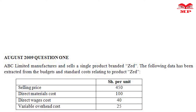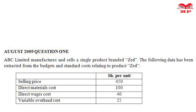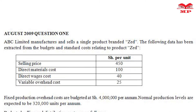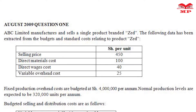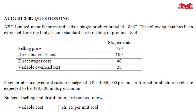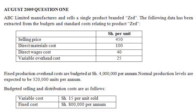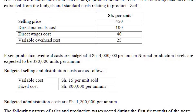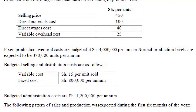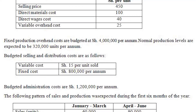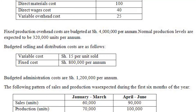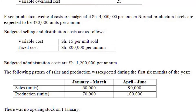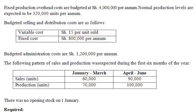Selling price: shillings 450 per unit. Direct materials cost: shillings 100. Direct wages cost: shillings 40. Variable overhead cost: shillings 25. Fixed production overhead costs are budgeted at shillings 4 million per annum. Normal production levels are expected to be 320,000 units per annum. Budgeted selling and distribution costs: variable cost shillings 15 per unit sold, fixed cost shillings 800,000 per annum. Budgeted administration costs are shillings 1.2 million per annum.